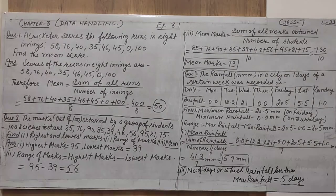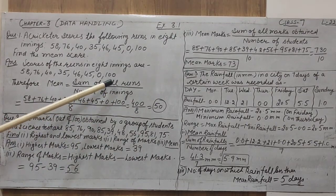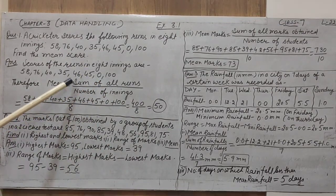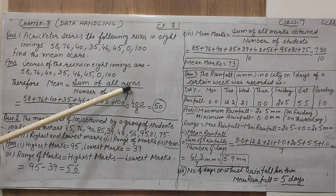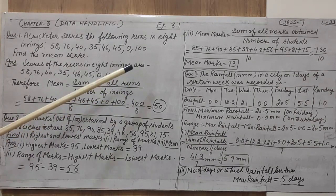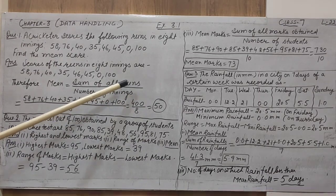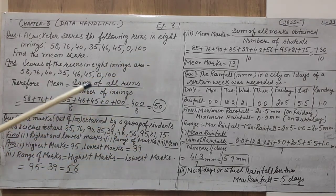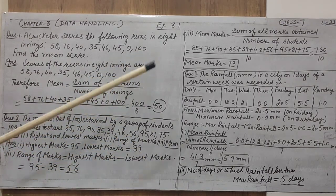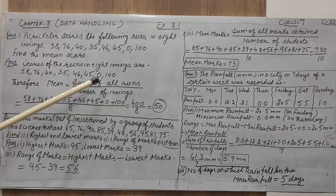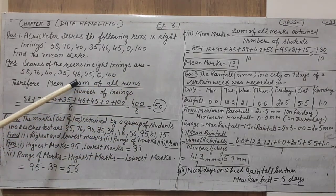I hope you understand how we can find the mean. The mean of anything — marks, runs, or anything else — uses the same formula: sum of all observations divided by number of observations. If the observation is marks, write sum of all marks. If runs, write sum of all runs. Or if weight of students is given, write sum of all weights.